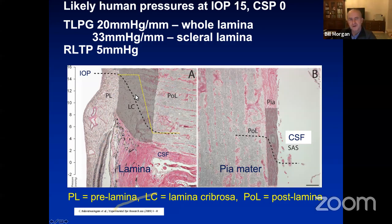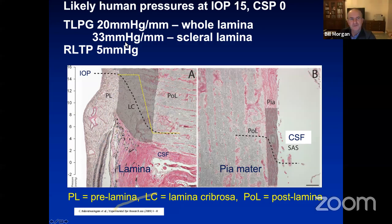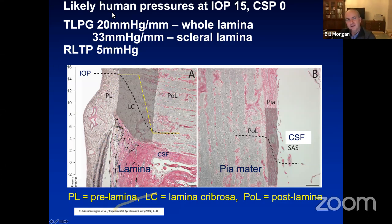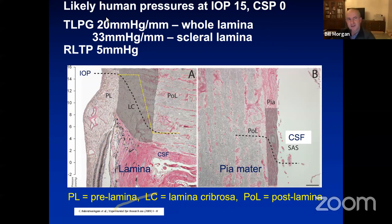In the human it's a bit different to the dog. There is a glial lamina cribrosa where the tissue is mainly glia, and then there is the collagen or connective tissue lamina cribrosa. When you calculate it over the collagenous scleral lamina cribrosa in the normal human, you get about 30 millimetres of mercury per millimetre. Including the glial lamina, it would be about 20 millimetres of mercury per millimetre. We can't do those pipette experiments in the human eye, but the typical gradient is somewhere between these two figures.